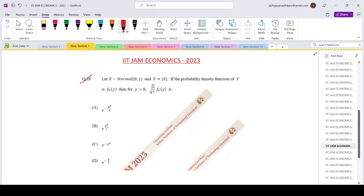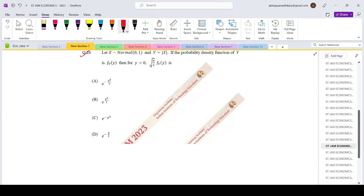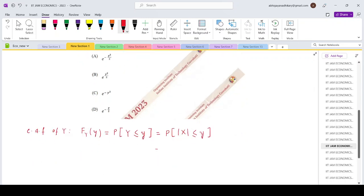Now let us come to question number 28 of the IIT Jam economics paper 2023. X follows normal 0 1 and we define a variable Y as mod X. Then the PDF of Y is FY. We need to find root over pi by 2 FY expression. So first we need to find out the CDF of Y which is capital F of Y. That is the probability capital Y is less than equals to small y. By definition capital Y is mod of X less than equals to small y. So that will make it probability of minus Y less than equals to X less than equals to small y.